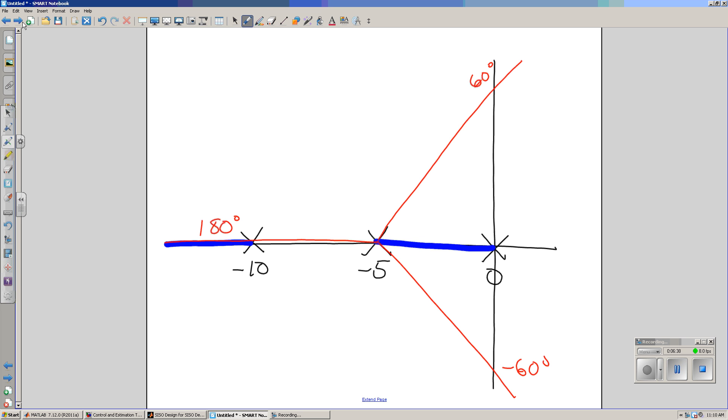What's going to happen now is this pole takes off to the left, this pole takes off to the right. At some point, they come together and go off to the asymptote. That right there is called the breakaway point. That would be useful to calculate.